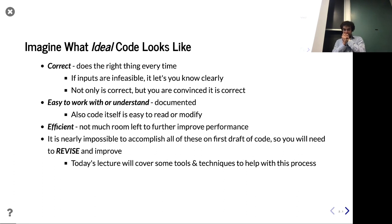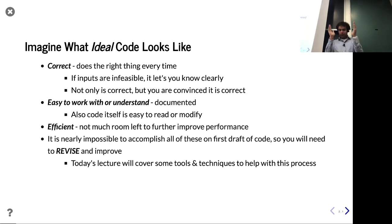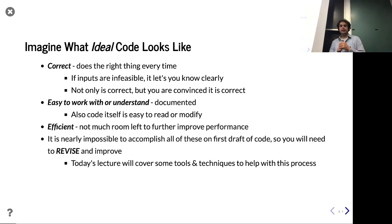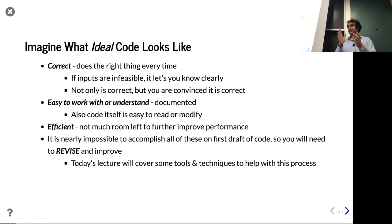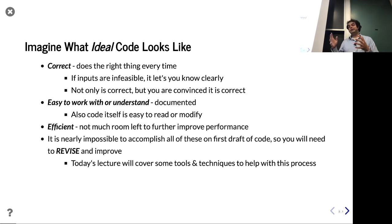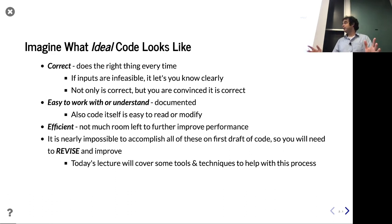To start off, imagine what the ideal code or project looks like. If you think about what the most important traits are: number one is correctness. You want code that does the right thing — not just some of the time, but every time. And if you're given bad input, rather than giving bad output, the code should tell you right away that these are infeasible inputs, clearly indicating the problem.